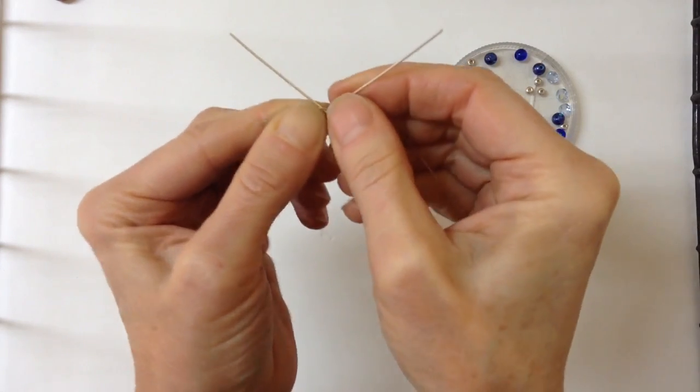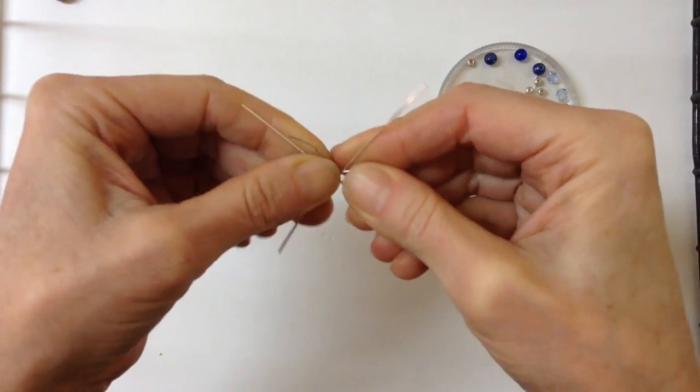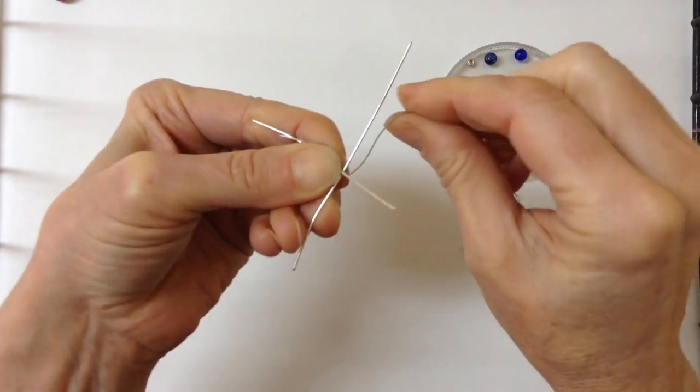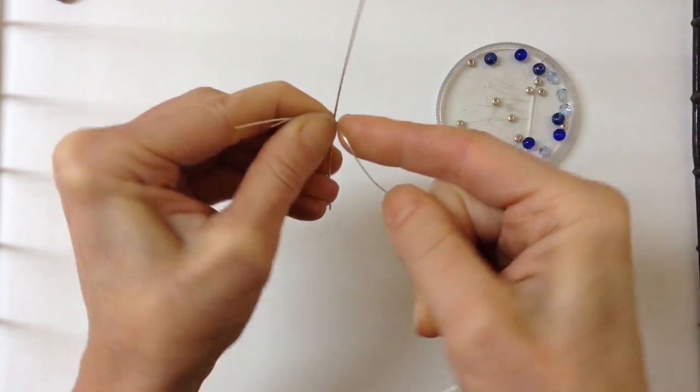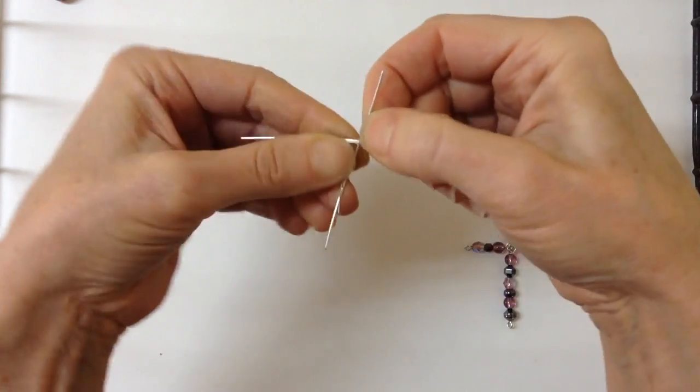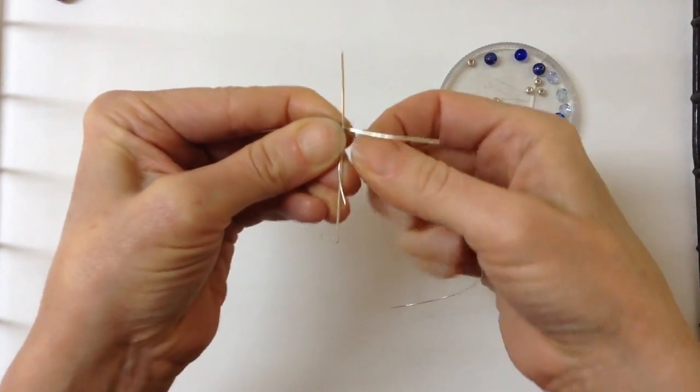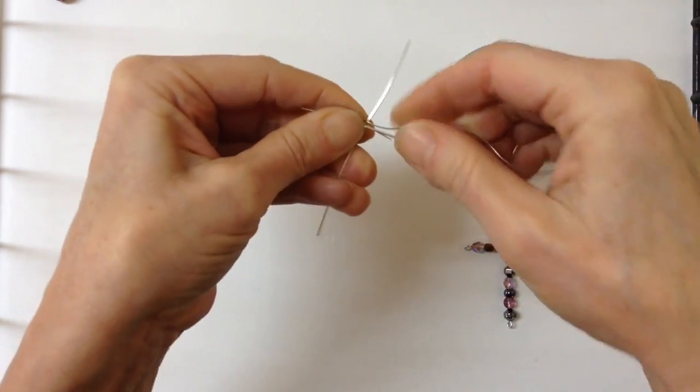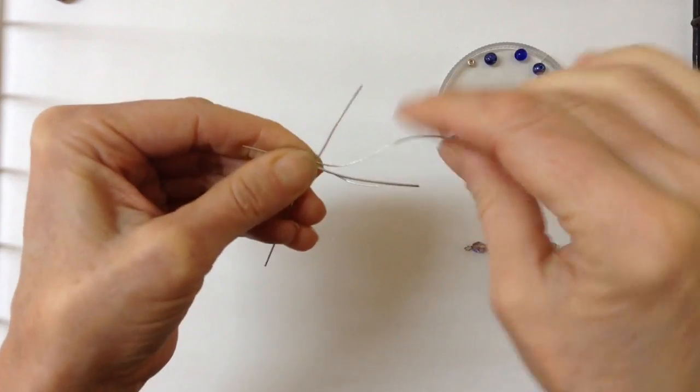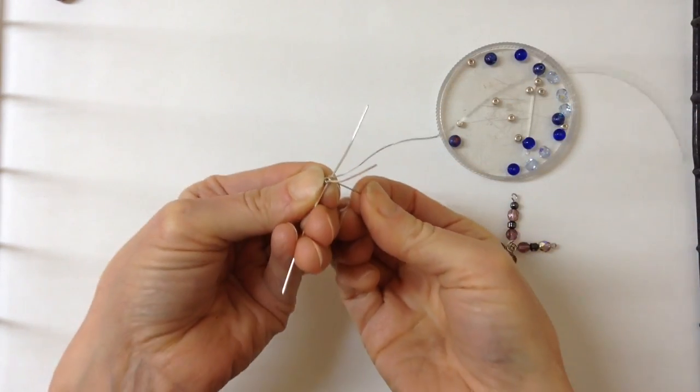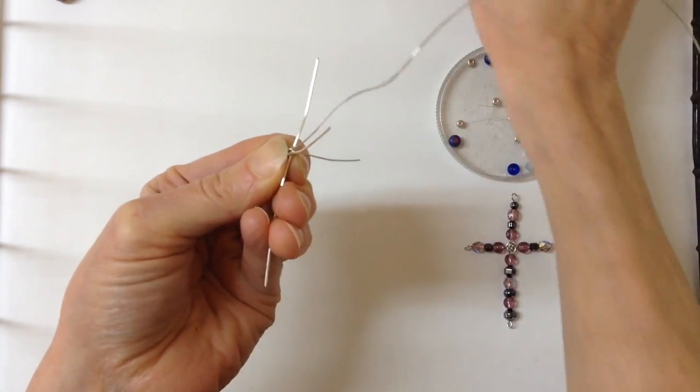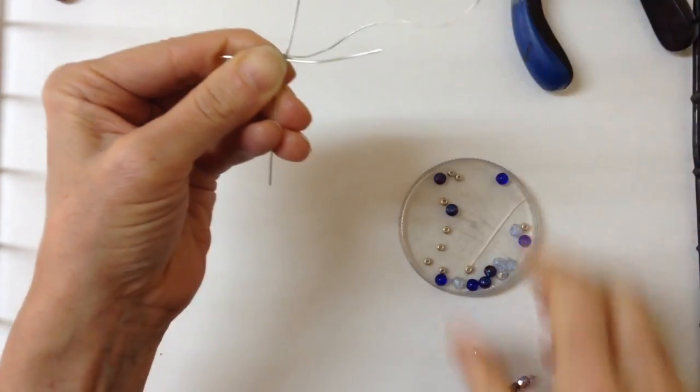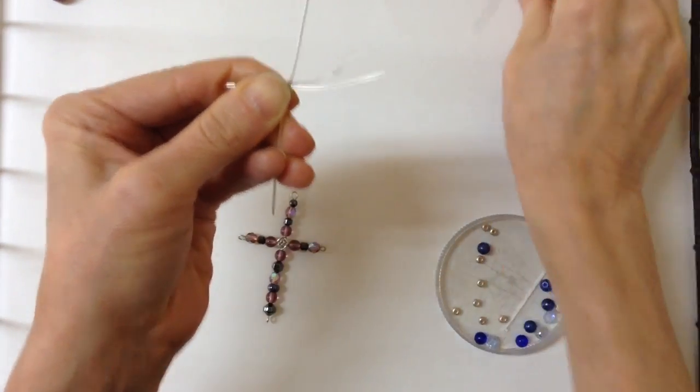When you start it's a little bit tricky because you have to get them kind of centered. Then we're just going to keep twisting around, so the first one, the second one, we'll twist it around, the third one. When we get around to where we started we'll clip that little end off and then we keep going with our long wire.